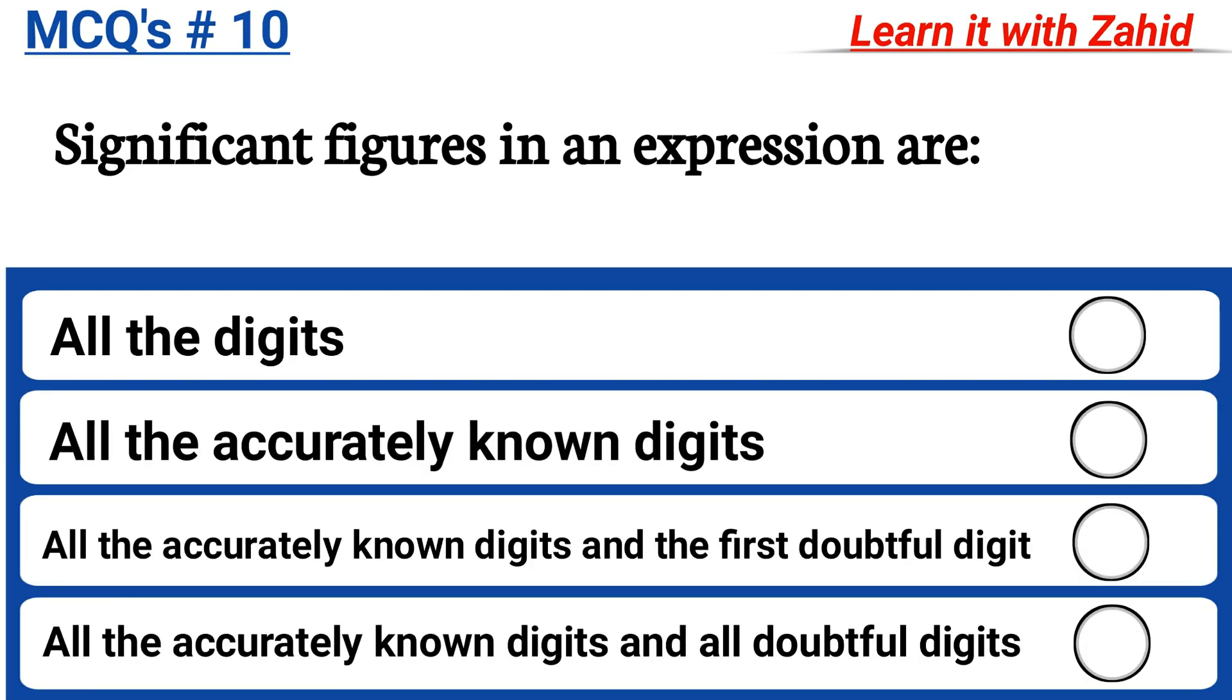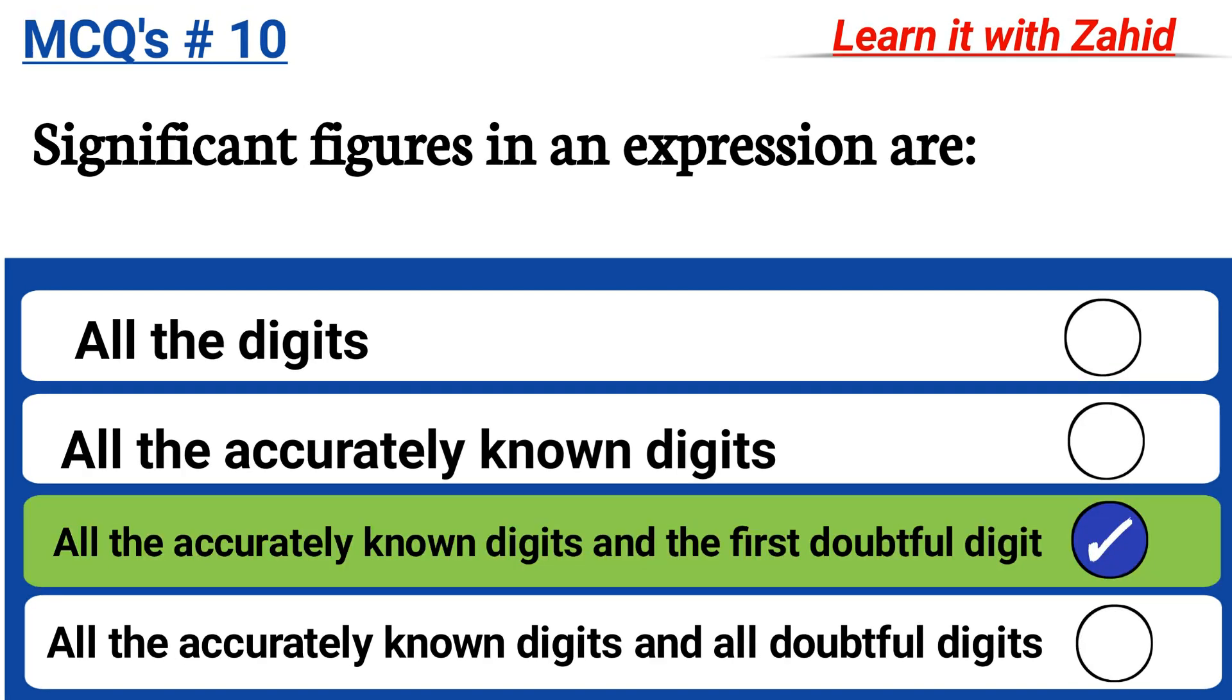Significant figures in an expression are All the digits, all the accurately known digits, all the accurately known digits and the first doubtful digit, all the accurately known digits and all doubtful digits. And the correct answer is All the accurately known digits and the first doubtful digit.